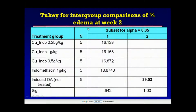This table shows the percent edema level at week 2. The percent edema in the induced osteoarthritis untreated group is markedly higher than all other treated groups. There is also a trend for the lowest dose of copper indomethacin to produce the lowest percent edema among the treated groups.